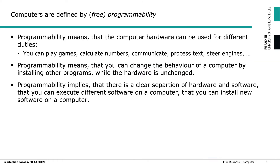If you look at the modern definition of computers, the term programmability — or free programmability — is the one which makes the difference. Programmability means that computer hardware can be used for different duties. Just take your own computer or smartphone: you can download apps, install programs, and by that make your computer a PlayStation, listen to audio, watch videos, do calculations using Excel, browse social networks, and communicate.